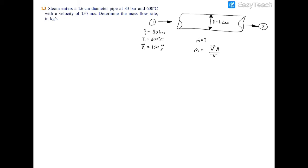Filling in what we know: m dot equals velocity, which was 150 meters per second, times the area, which would be π over 4 times d squared.